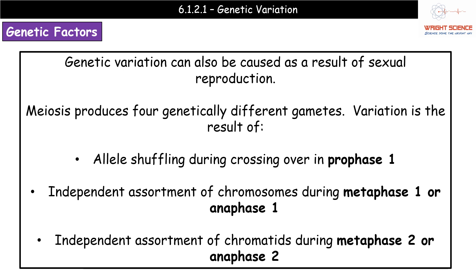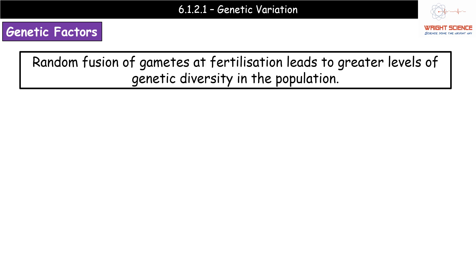We then get independent assortment of the chromatids — and go careful here — which occurs in metaphase 2 or anaphase 2. So chromosomes undergo independent assortment in metaphase 1 or anaphase 1, while chromatids do so in metaphase 2 or anaphase 2. Finally, there is the completely random fusion of gametes at fertilization — it is literally a game of chance as to which sperm fertilizes which egg, leading to yet more genetic diversity within the population.